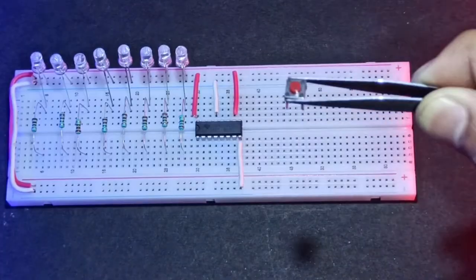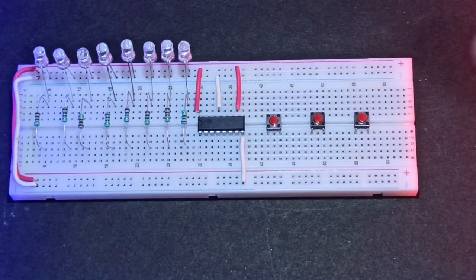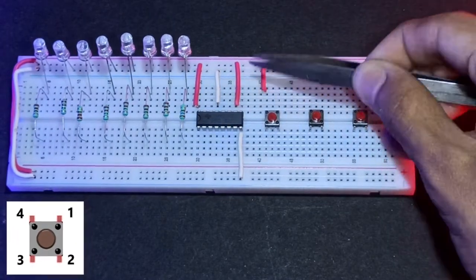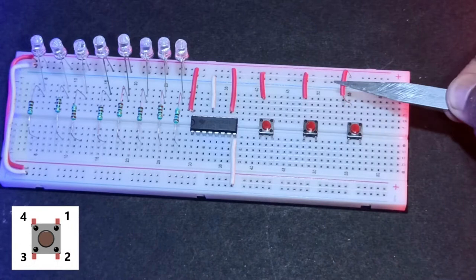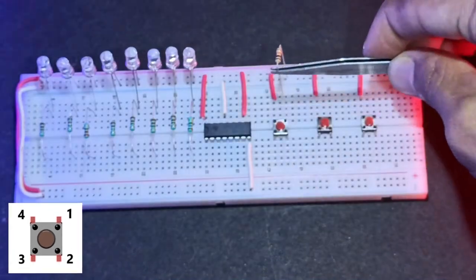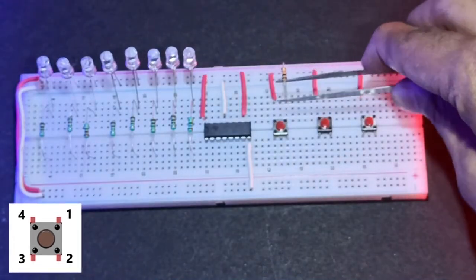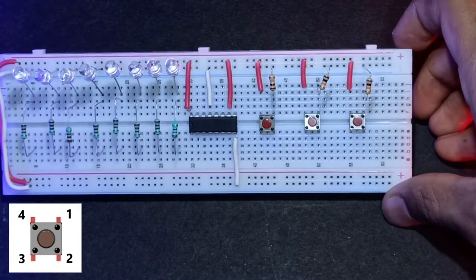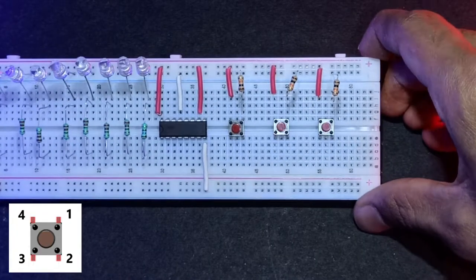Attach a button on the breadboard. After that, connect the button pin 4 to 5V. Do the same process for the other two buttons. After that, add a 10K resistor on button pin 1 to ground for avoiding the electronic noise. Also do the same for the other two buttons.